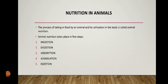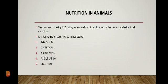The process of taking in food by an animal and its utilization in the body is known as animal nutrition. Animal nutrition takes place in five steps: number one is ingestion, number two is digestion, number three is absorption, number four is assimilation, and number five is ejection.